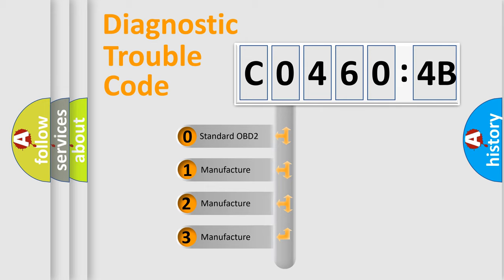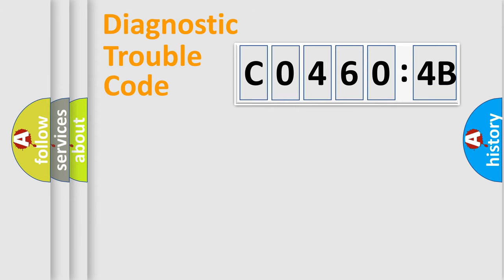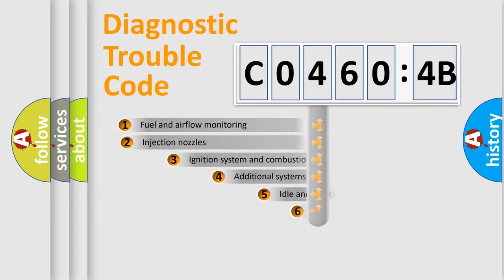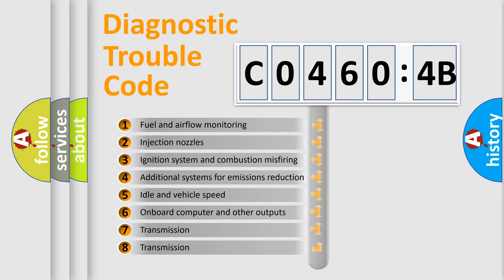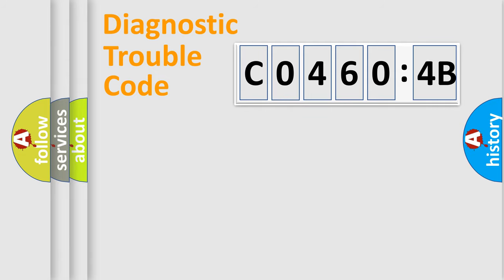If the second character is expressed as zero, it is a standardized error. In the case of numbers 1, 2, 3, it is a manufacturer-specific expression of the car error. The third character specifies a subset of errors. The distribution shown is valid only for the standardized DTC code.